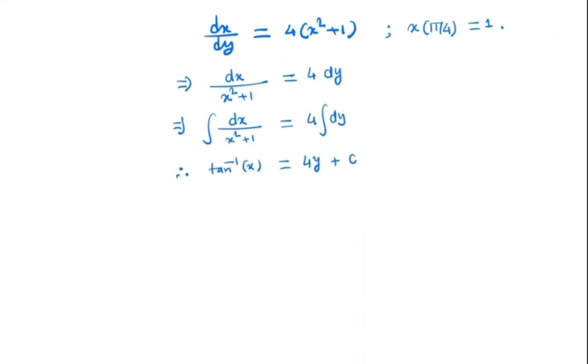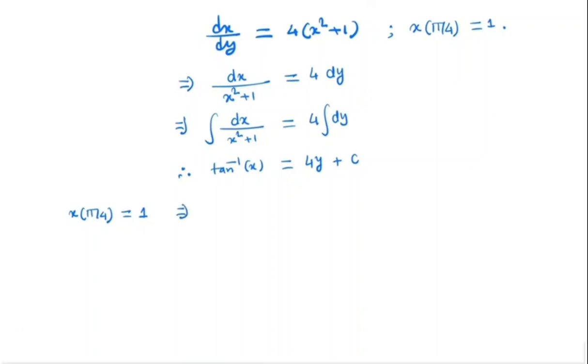Now we know that x of pi by 4 will be 1. So we will put this value in the equation to find the constant c. So tan inverse 1 is equal to 4 times pi by 4 plus c.